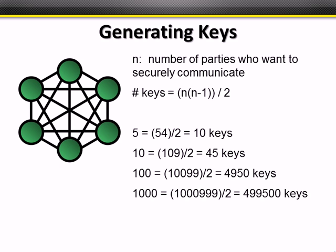One problem with shared key systems is that any two parties need a shared key between them to communicate. As the number of parties increases, the number of keys increases exponentially. For example, just five people who want to communicate securely need ten keys between them, but with a thousand people you'd need 499,000 keys.